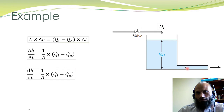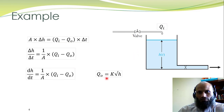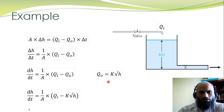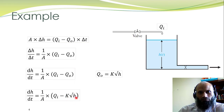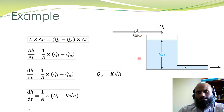For the case of turbulent flow, Q_0 is proportional to the square root of the head H, that is Q_0 = K × √H. Substituting this into the equation, we obtain the differential equation: dH/dt = (1/A) × (Q_i − K√H). This equation is the mathematical model for this liquid level system.